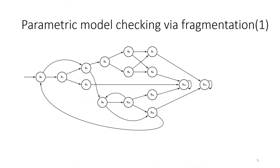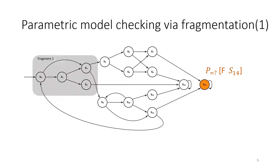In this work, we present an automated fragmentation method to aid PMC and extend its applicability. For example, assuming we want to check the probability to reach the final state in a parametric model — if the existing PMC fails to handle it due to its size, we can break down this model into a number of smaller ones so that the existing PMC can handle them, and we combine the expressions obtained from each smaller model to construct the final result. We call such smaller models fragments.